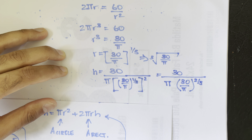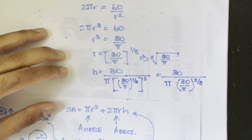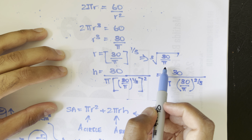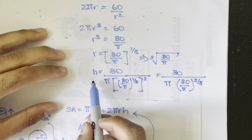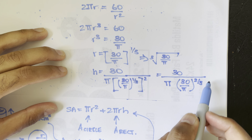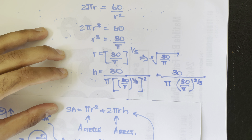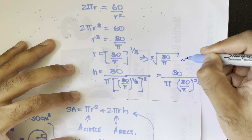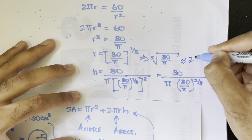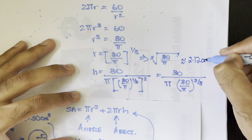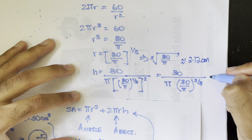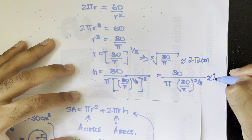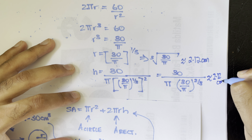Those are the dimensions. The radius is (30/π)^(1/3) and the height has the expression we derived. Putting these into the calculator, the radius is approximately 2.12 centimeters and the height is also approximately 2.12 centimeters.